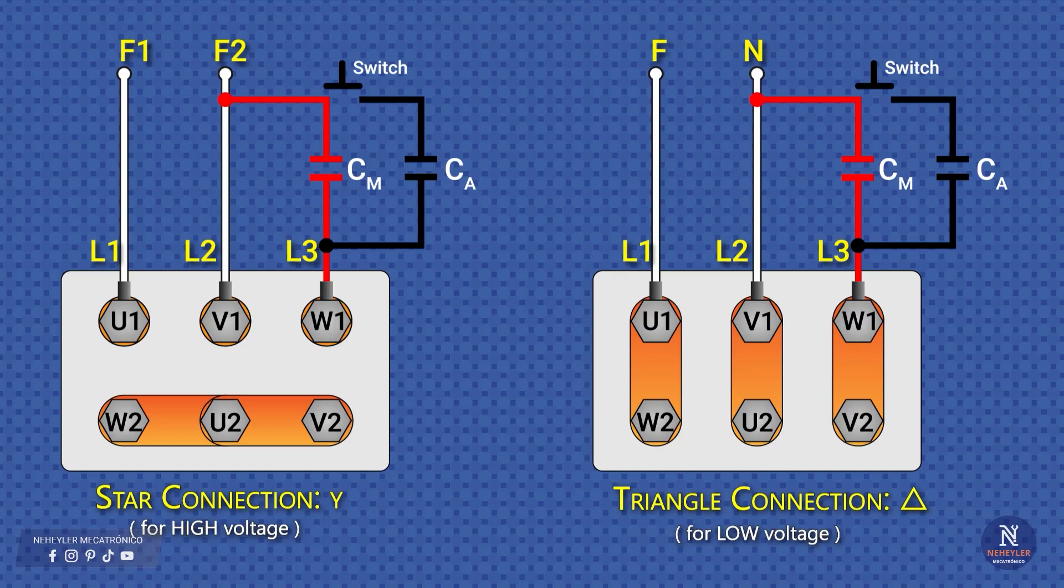When the supply is single-phase, either between two lines or between line and neutral, only two of the three motor terminals receive power directly, and the third is connected through a capacitor. For example, the phase is connected to terminal U1, the neutral to terminal V1, and at the third vertex, W1, we connect the run or permanent capacitor, which remains always in service and is responsible for creating the necessary phase shift so that the motor can start and keep running.